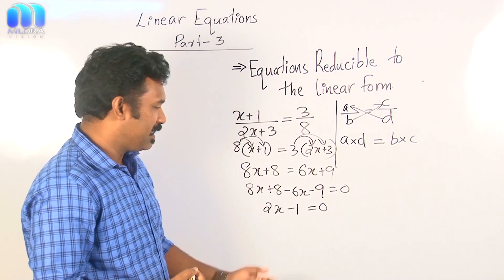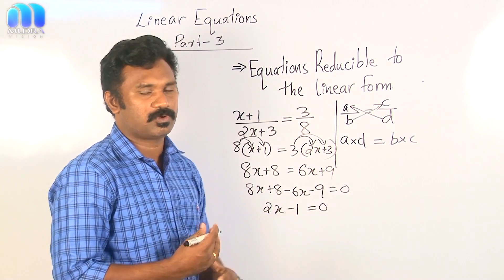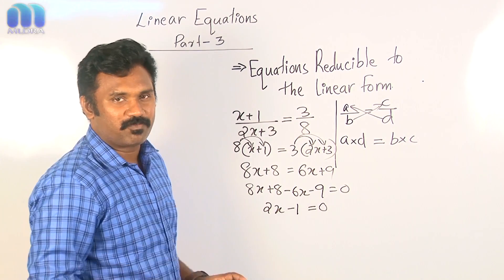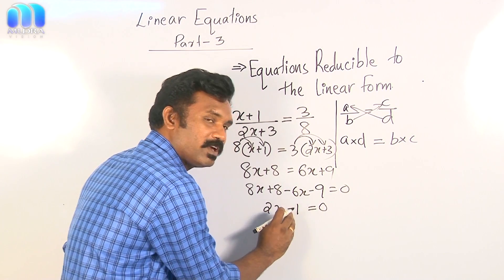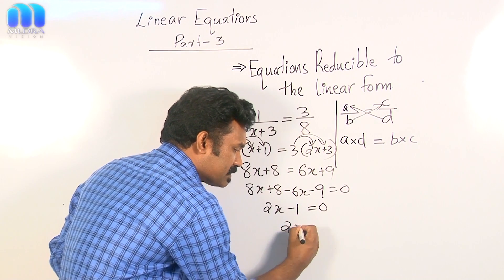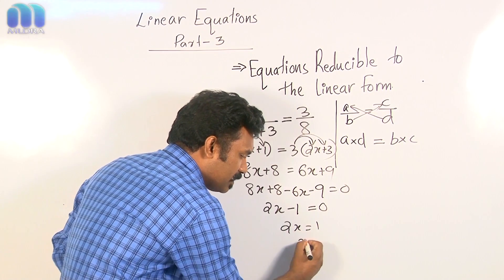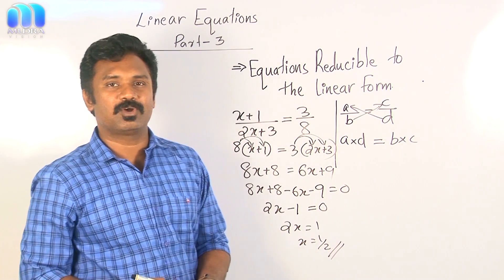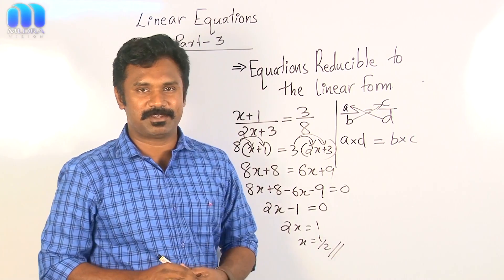It is in the standard form — a term with a variable and a constant, with the other side equal to 0. To find the value of x, we shift the constant to the right side: 2x equals 1, so x equals 1 over 2, which is one-half. Therefore x equals one-half is the solution of this equation.